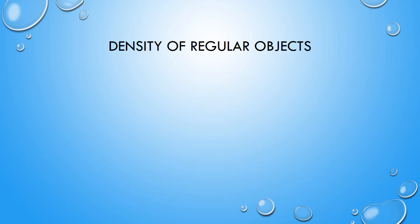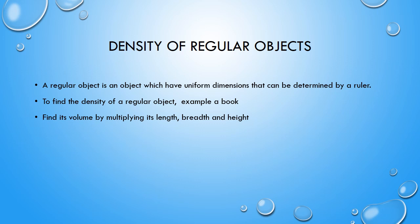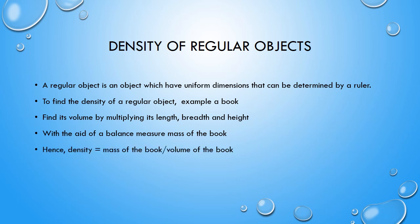A regular object is one whose dimensions are definite and can be measured directly with a ruler. To find its density — for example, a book — measure its length, breadth, and height to get its volume (length × breadth × height). Then use a balance to measure the mass of the book. The density is the mass of the book divided by its volume.